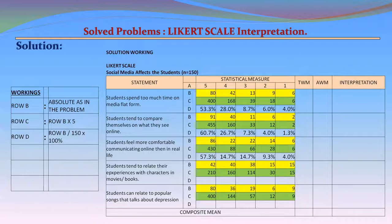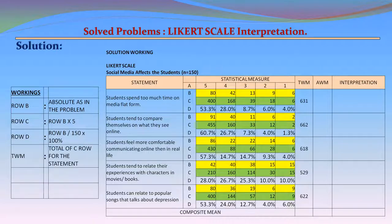For Statement 3, Row D percentages are: 57.3%, 14.7%, 14.7%, 9.3%, and 4%. For Statement 4, Row D percentages are: 28%, 26.7%, 25.3%, 10%, and 10%. For Statement 5, Row D percentages are: 53.3%, 24%, 12.7%, 4%, and 6%.